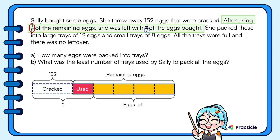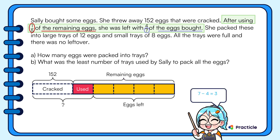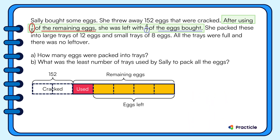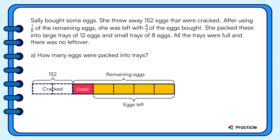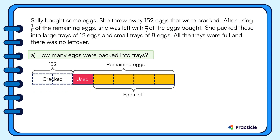We can subtract the orange units from seven units. Since we have one unit here, we subtract that from three units. So we can represent the 152 cracked eggs with two units. Now that all the units are equal, we're ready to solve Part A: how many eggs were packed into trays?